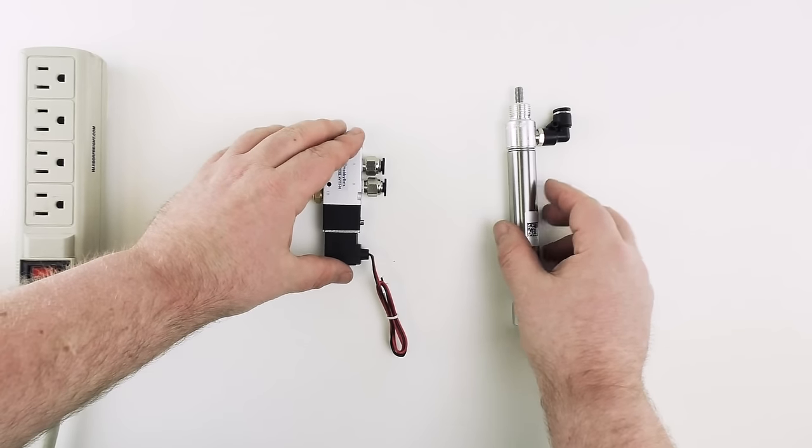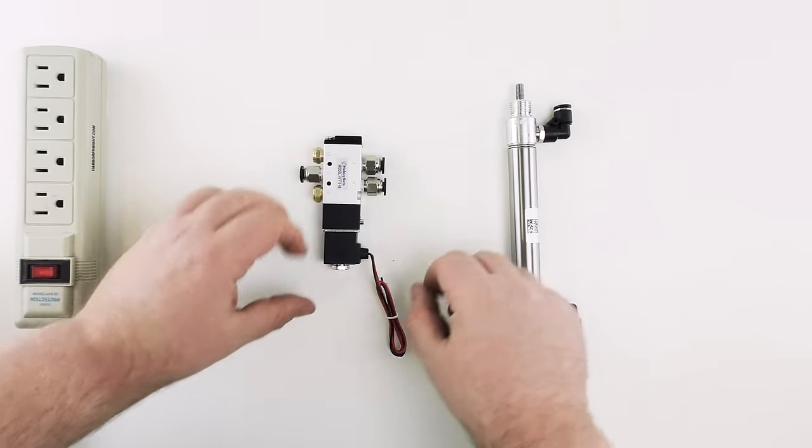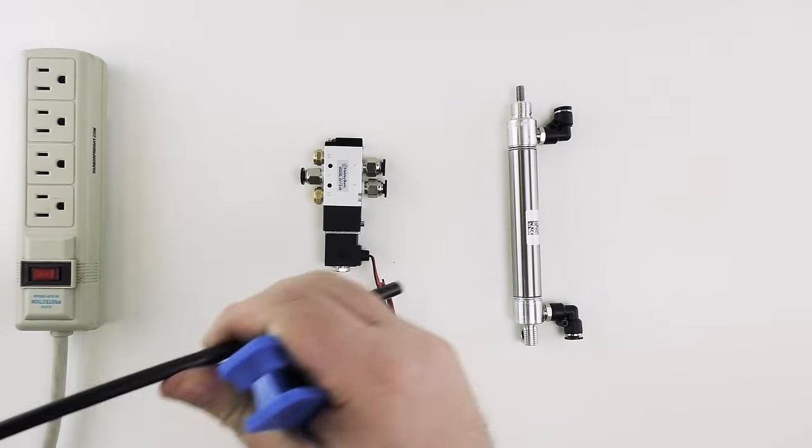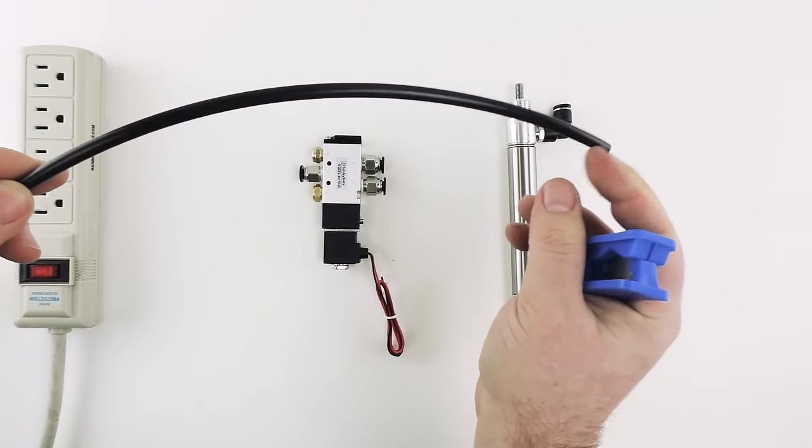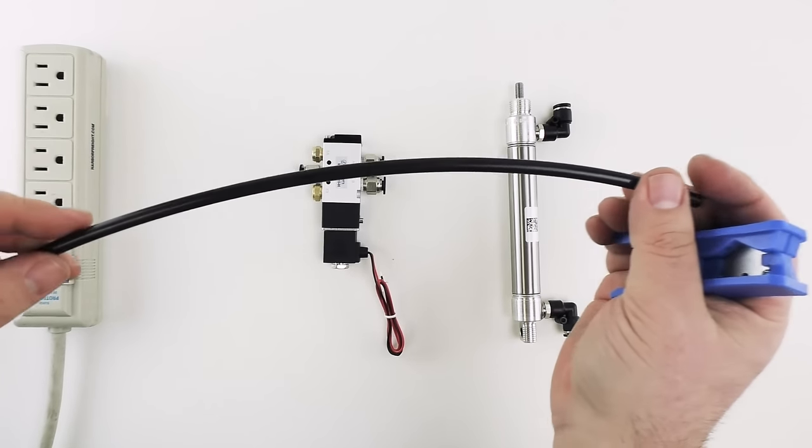The next step is going to be to connect our solenoid to our cylinder using our air line. For this we're going to be using some quarter inch polyethylene air line. This is the most common type of air line used in this sort of application.